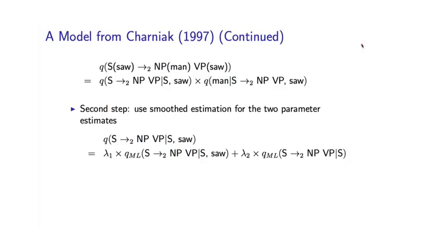Now let's look at the second step in deriving this estimate. The first step was to break this parameter down into the product of two different terms, essentially using the chain rule of probabilities. We first predict the rule, then predict the lexical item conditioned on the rule together with the head word. The second step is to use smoothed estimation for the parameter estimates of these two parameters. We'll apply exactly the same ideas we saw for language modeling.